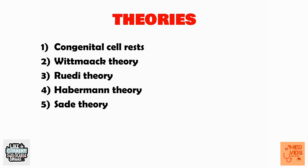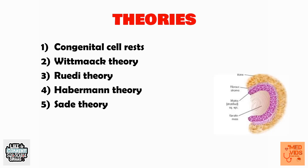The important things which may be asked in your exams are the theories explaining the origin of cholesteatoma. There are five important theories: the congenital cell rests theory, Wittmaack theory, Ruedi theory, Habermann theory, and Seid theory. The congenital cell rests theory suggests that congenital cell rests present in the middle ear get activated and form cholesteatoma — this explains the congenital variety.